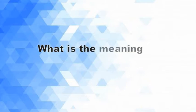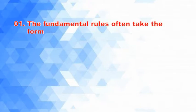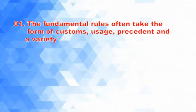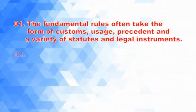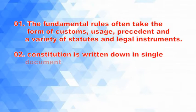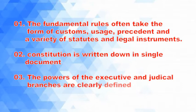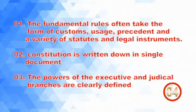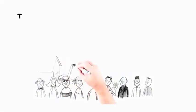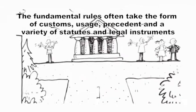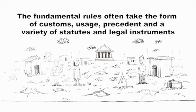Question 5: What is the meaning of Uncodified Constitutions? 1. The fundamental rules often take the form of customs, usage, precedent and a variety of statutes and legal instruments. 2. Constitution is written down in a single document. 3. The powers of executive, legislative and judicial branches are clearly defined. Answer: 1 — The fundamental rules often take the form of customs, usage, precedent and a variety of statutes and legal instruments.